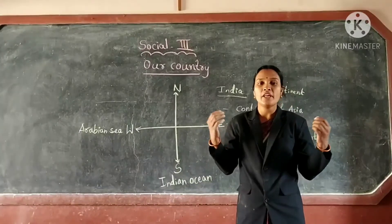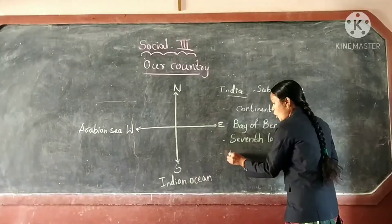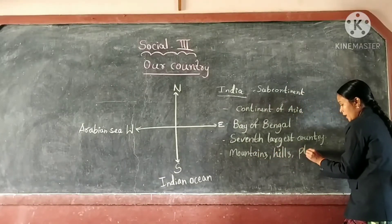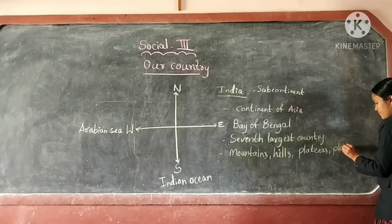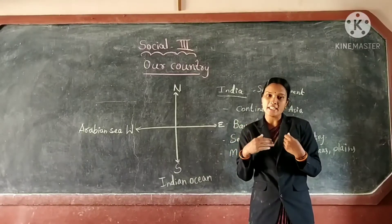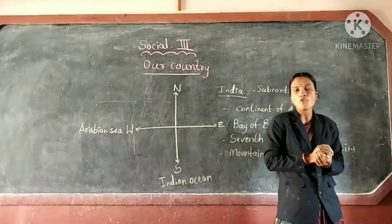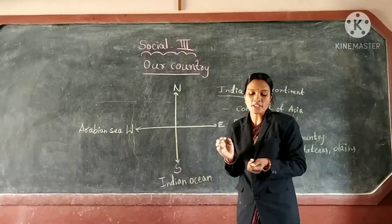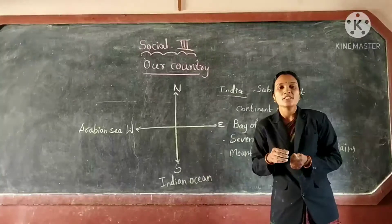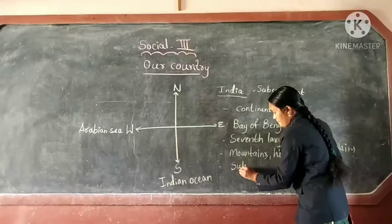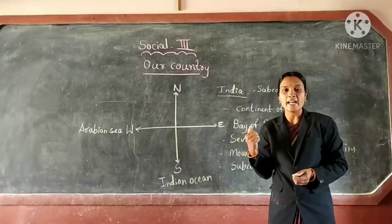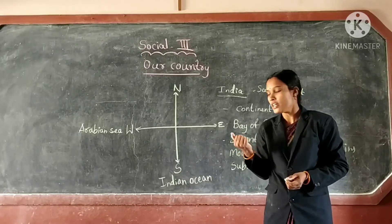Our India has a variety of landforms. It has mountains, hills, plateaus, and plains. This makes our India really beautiful. On account of its large size and vast variation in climate, India is called a subcontinent.